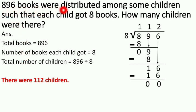896 books were distributed among some children such that each child got 8 books. How many children were there? So what do we have to do here? Division. Why? Because total books were distributed, 896. And how many children were there? 8 books. So how many children were there?